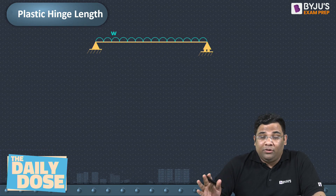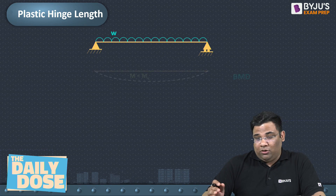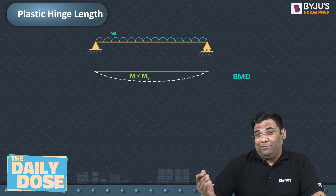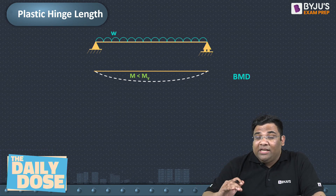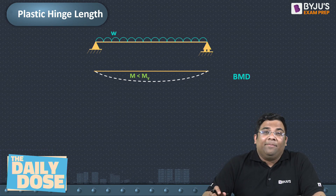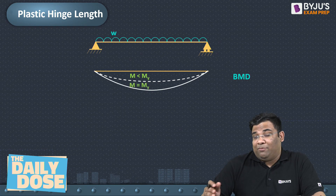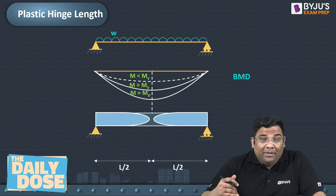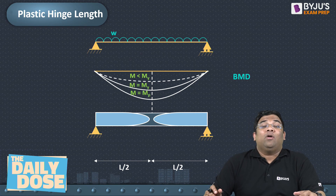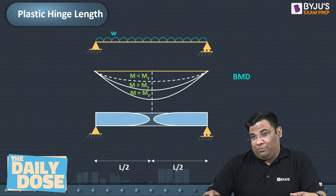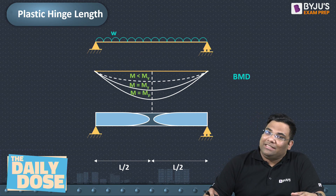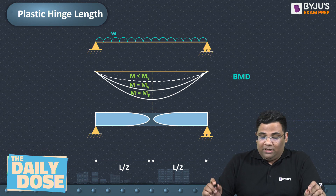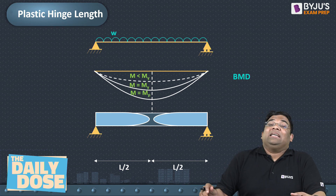Suppose a UDL is acting on a simply supported beam. When you increase the load, the bending moment will increase. Initially the bending moment will be less than the yield moment. Then when you increase the load, it becomes equal to the yield moment, and then more than the yield moment — equal to the plastic moment capacity.